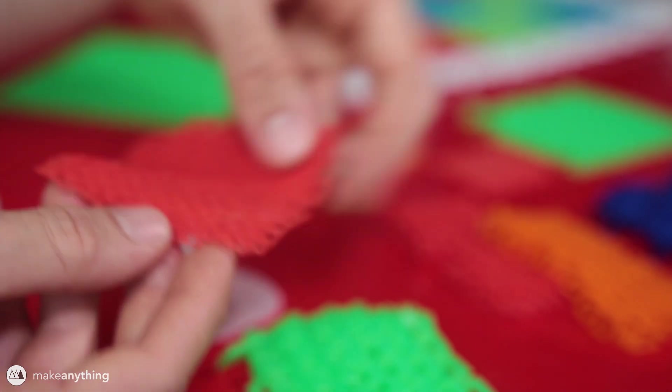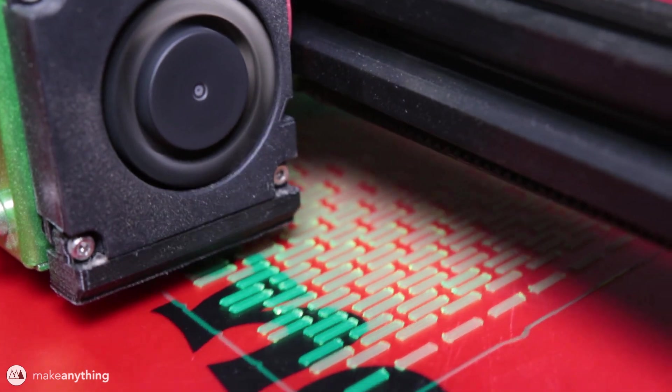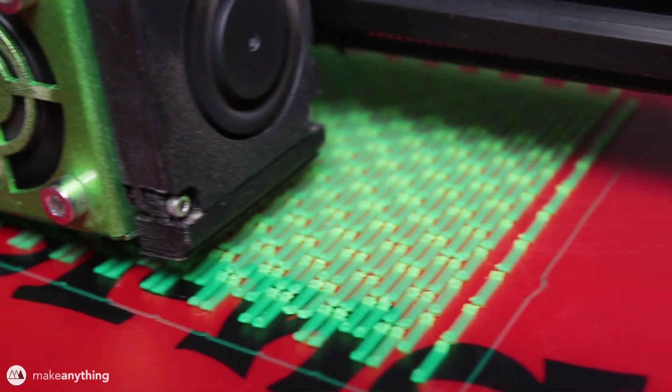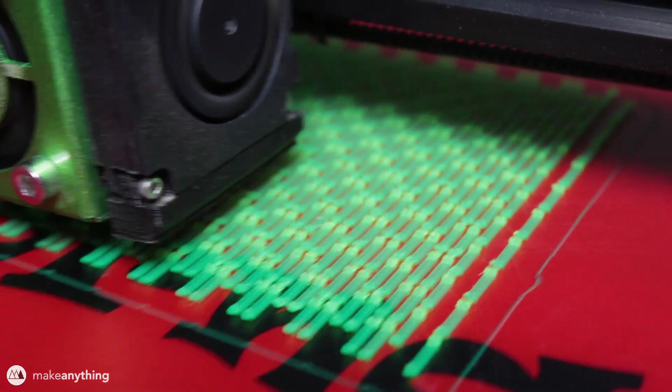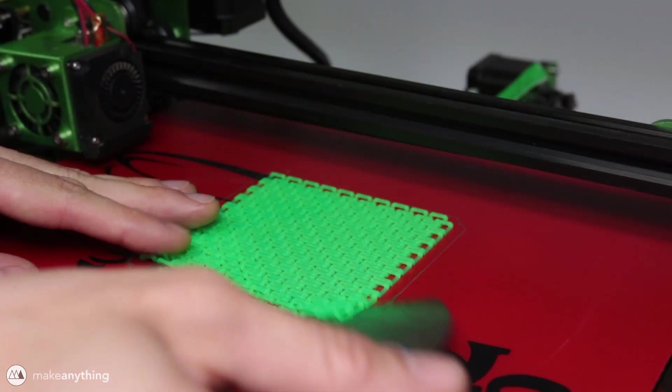I just kept scaling this model up a little bit at a time until I was able to get it to print really successfully. And here it is printed at pretty much double the original scale on the TiVo Tornado.